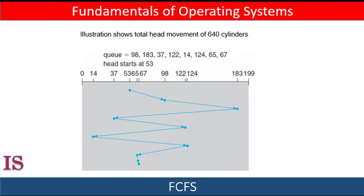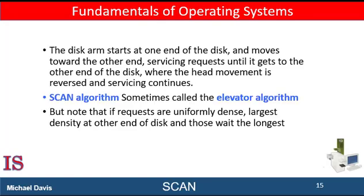In the SCAN algorithm, the disk arm starts at one end of the disk and moves toward the other end, servicing requests until it gets to the other end. At the other end, the direction of head movement is reversed and servicing continues. The head continuously scans back and forth across the disk. The SCAN algorithm is sometimes called the elevator algorithm since the disk arm behaves like an elevator in a building — first servicing all the requests going up and then servicing all the requests coming back, or in our case, servicing all the requests going from outside to in and then from inside to out.